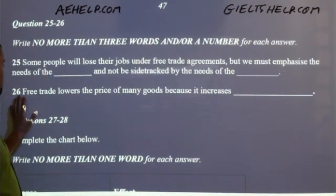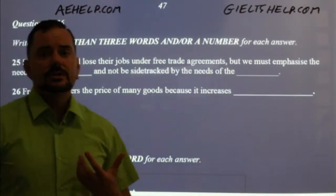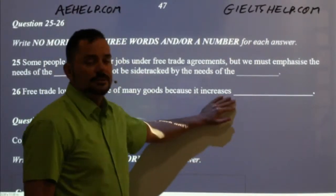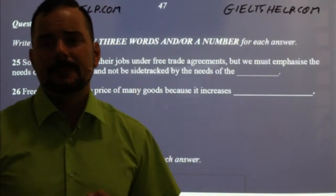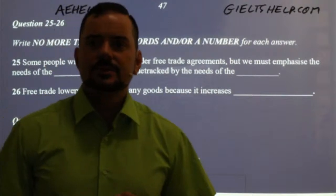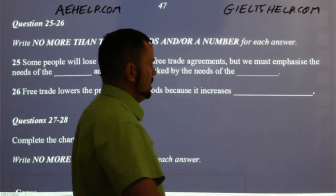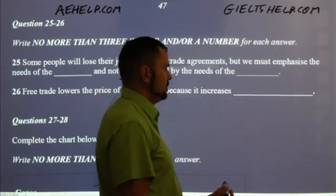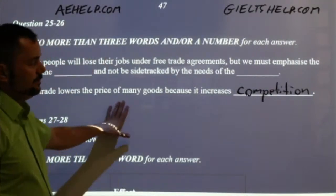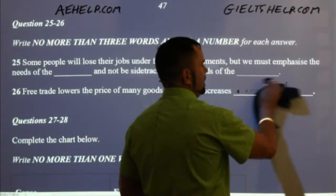So far, so good. Number 26: free trade lowers the price of many goods because it increases something. Logic can help you figure this out without even listening — so if you miss an answer, don't panic. Using good critical thinking and your own knowledge, you can guess. Samuel says it should be 'competition,' and Un agrees — it's competition. Anyone who studies even high school level economics knows this answer. When you have free trade, there's more competition among companies, which lowers the price of products.